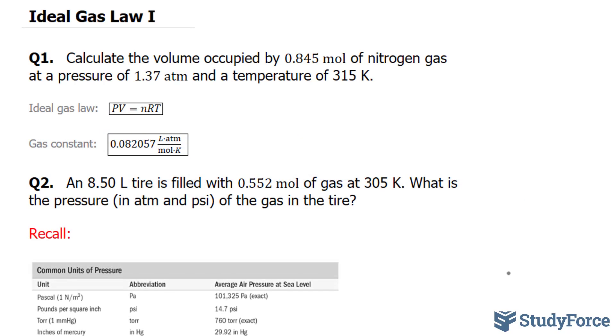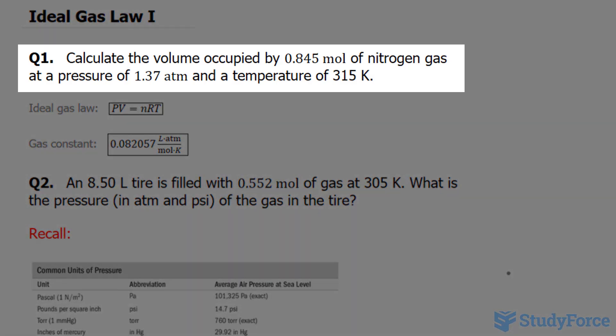In this lesson, I'll show you how to solve ideal gas law problems. Question 1 reads: calculate the volume occupied by 0.845 moles of nitrogen gas at a pressure of 1.37 atm and a temperature of 315 Kelvin.